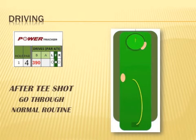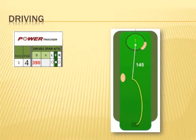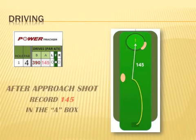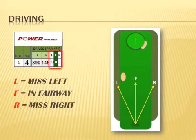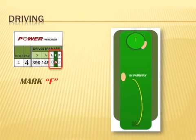After you hit your tee shot, you find your ball in the fairway. You follow your normal routine and determine the remaining distance to the hole is 145 yards. You select a club and hit your shot to the green. After the approach shot, you record 145 in the A box. For driving accuracy, you mark F when in the fairway, or L or R when you miss left or right. Since this tee shot is in the fairway, you mark F.